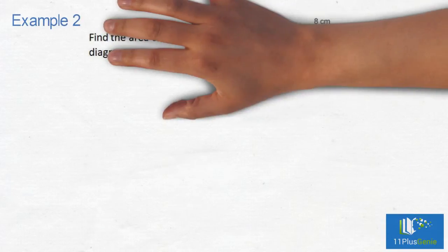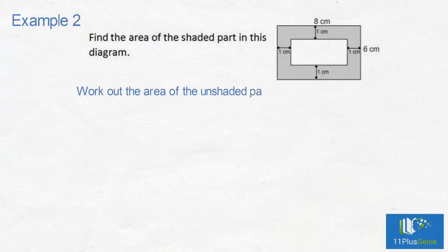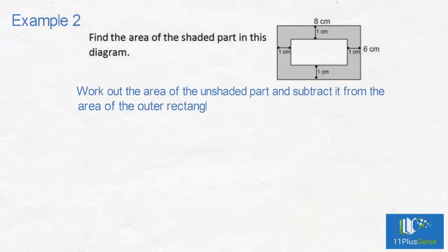Example 2. Find the area of the shaded part in this diagram. The easiest method is to work out the area of the unshaded part and subtract it from the area of the outer rectangle.